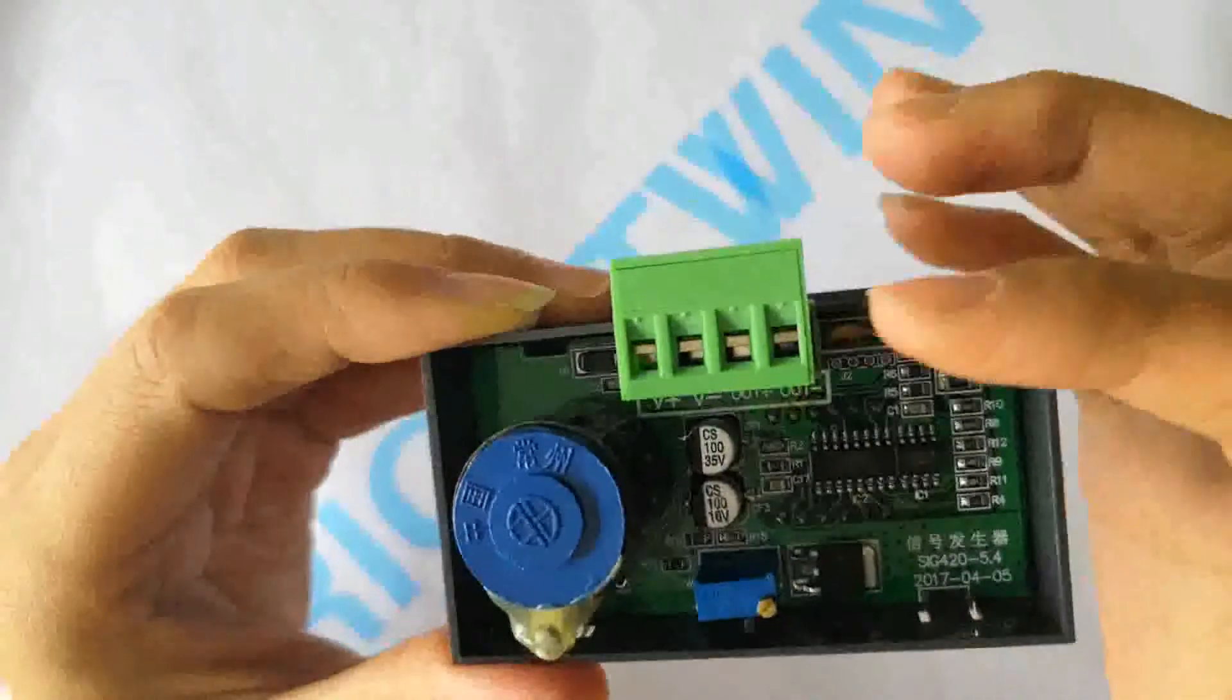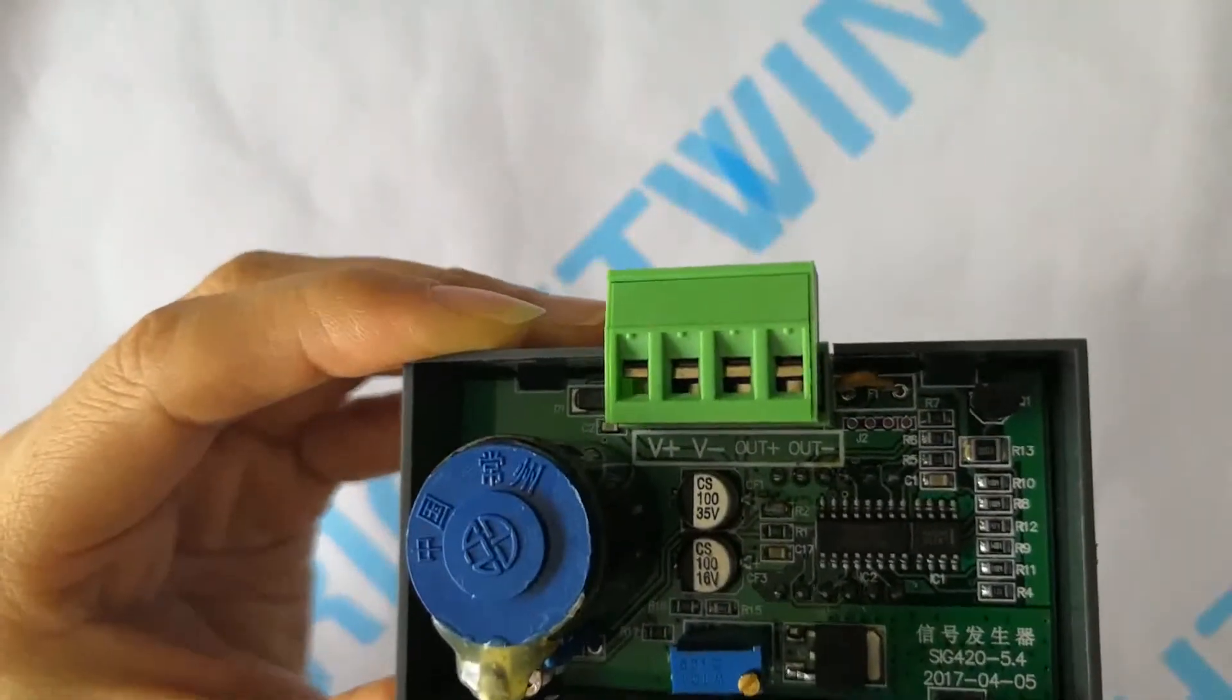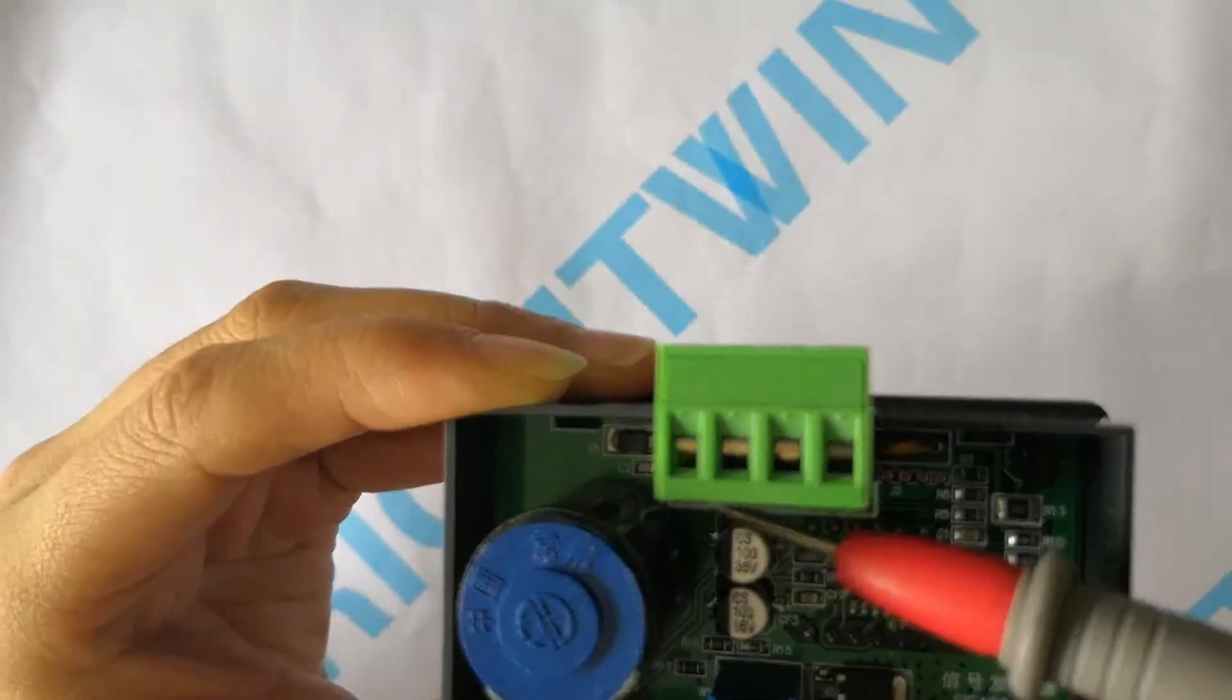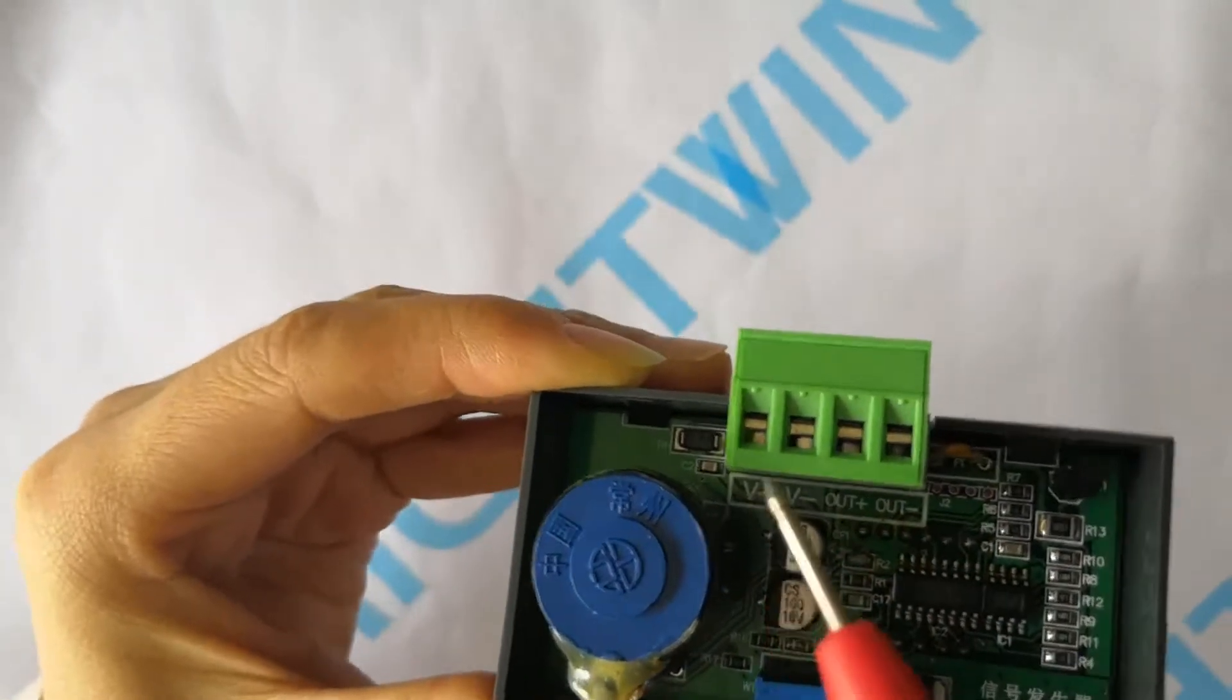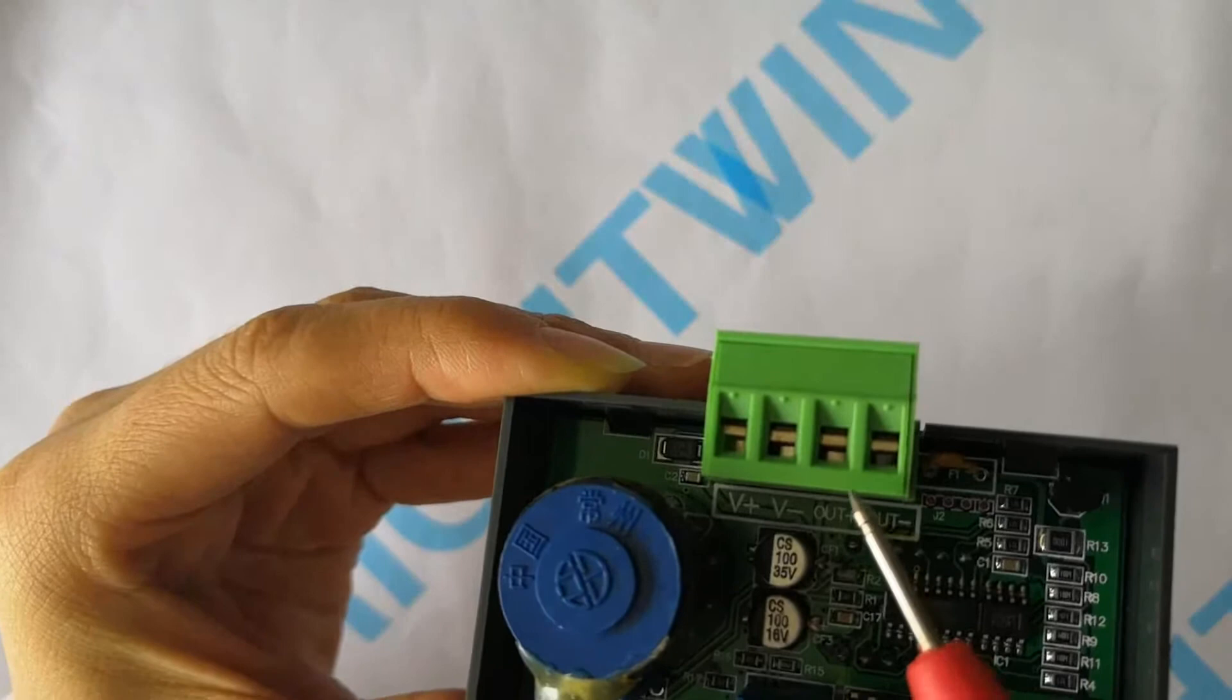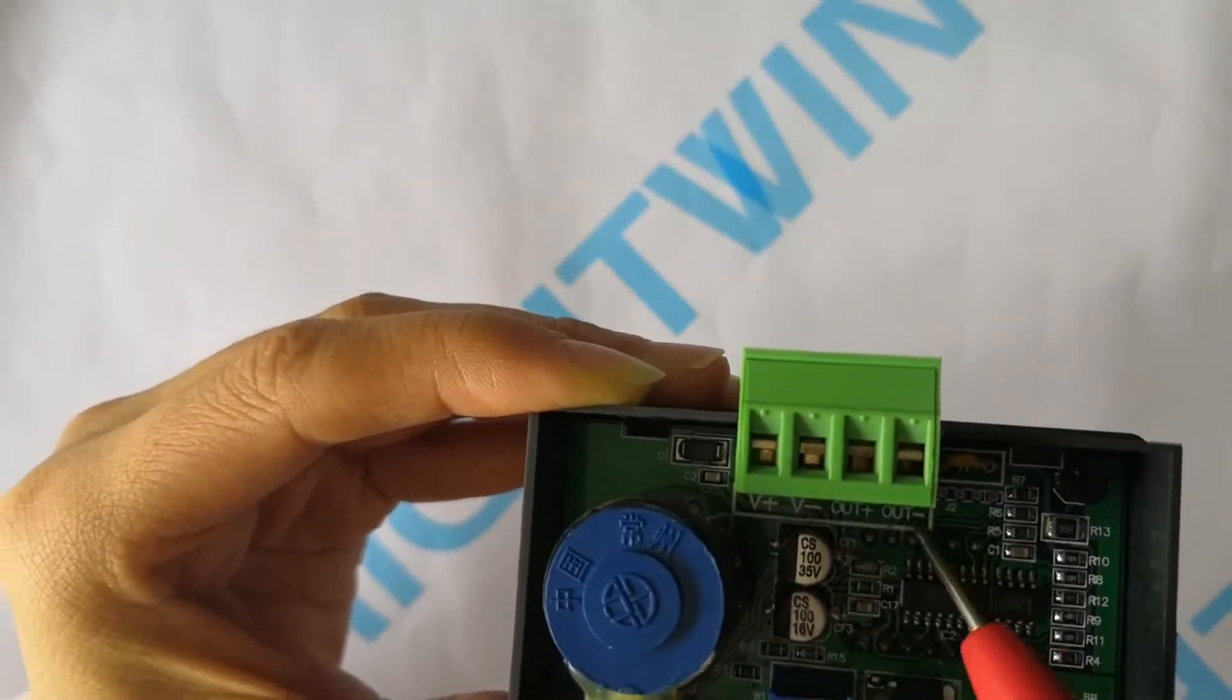Look at the wiring terminal block. Here we have the 24V power supply positive terminal and negative terminal, and the output positive terminal and negative terminal.